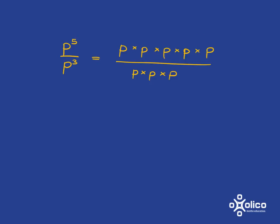And if we were to work with letters, the same thing would apply. If we've got p to the 5 divided by p to the 3, we're going to write it out. p to the 5 just means you've got 5 p's multiplied together, p to the 3, 3 p's multiplied together. And then the 3 p's at the bottom will cancel with 3 of the p's at the top, and that will leave you with p times p, which is p squared.